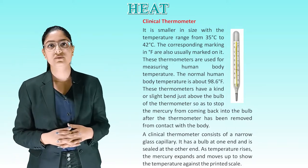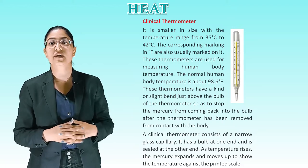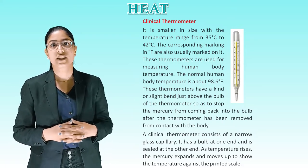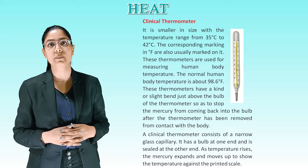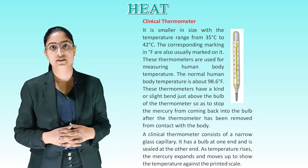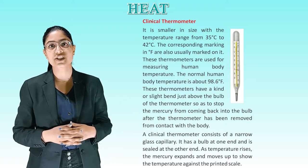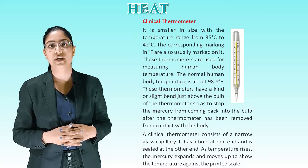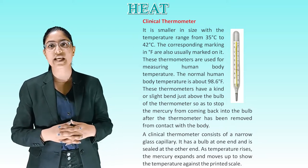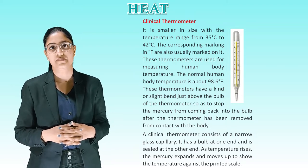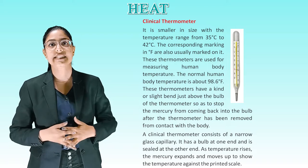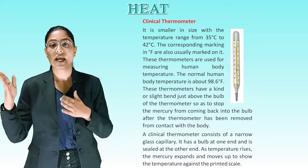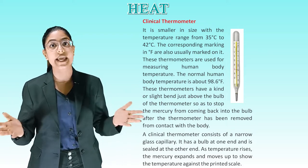Clinical Thermometer. It is smaller in size with a temperature range from 35°C to 42°C. The corresponding markings in degree Fahrenheit are also usually marked on it. These thermometers are used for measuring human body temperature. The normal human body temperature is about 98.6°F. They have a slight bend just above the bulb to stop the mercury from falling back into the bulb after the thermometer is removed from the body. A clinical thermometer consists of a narrow glass capillary, with a bulb at one end sealed at the other. As temperature rises, the mercury expands and moves up to show the temperature against the printed scale.